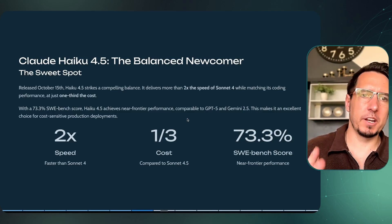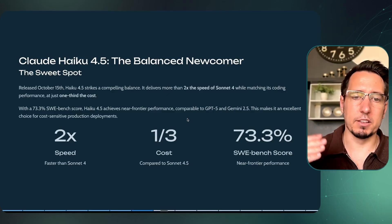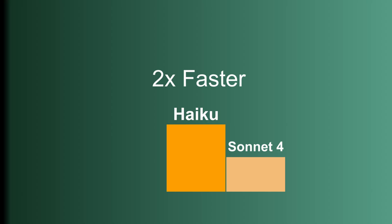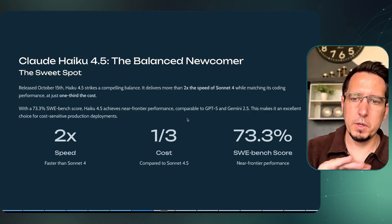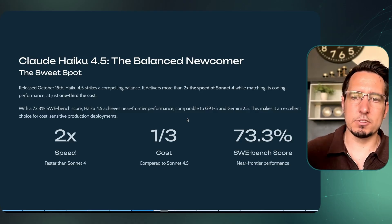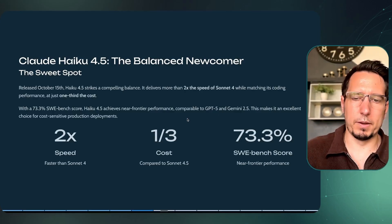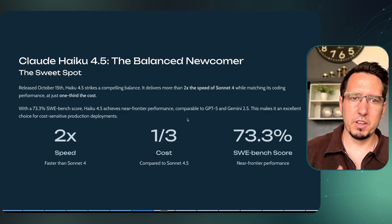Now the new model released recently: Haiku 4.5. In terms of performance, it seems quite great. It's a third of the cost of Sonnet 4.5 and two times faster than Sonnet 4, which effectively makes it significantly faster than Sonnet 4.5 as well. On the SWE-bench it scores 73%, about 11 points lower than Sonnet 4.5 — so you're getting a lot more speed and lower cost for quite good performance.